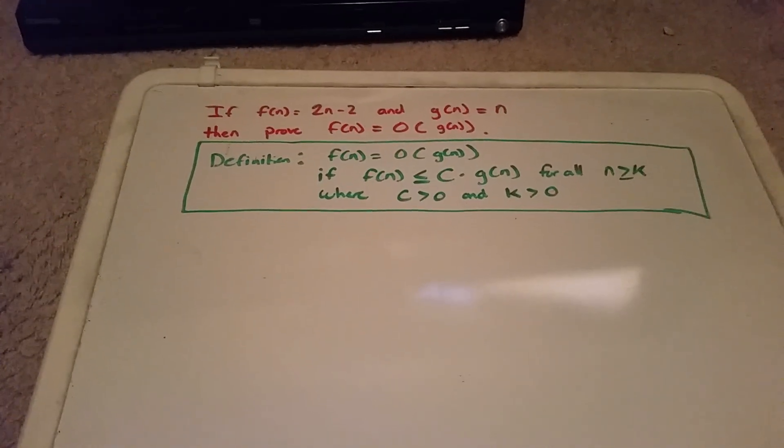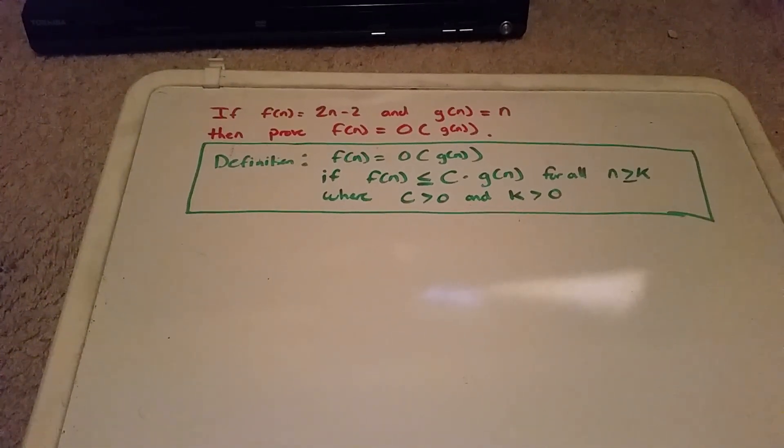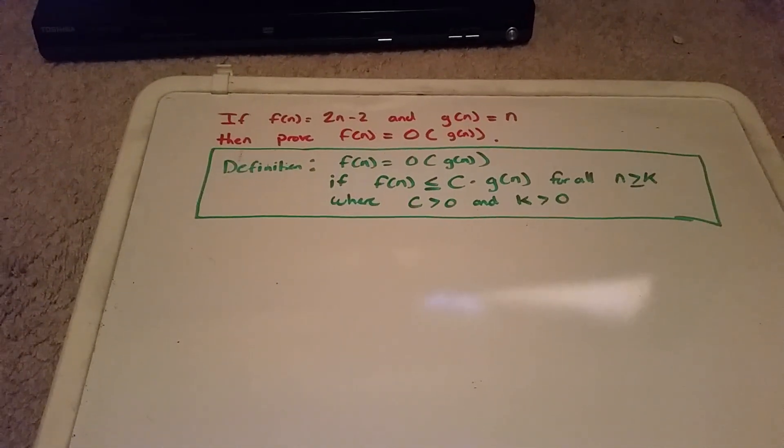Hello, YouTube. This is a proof that 2n minus 2 belongs to big O of n.